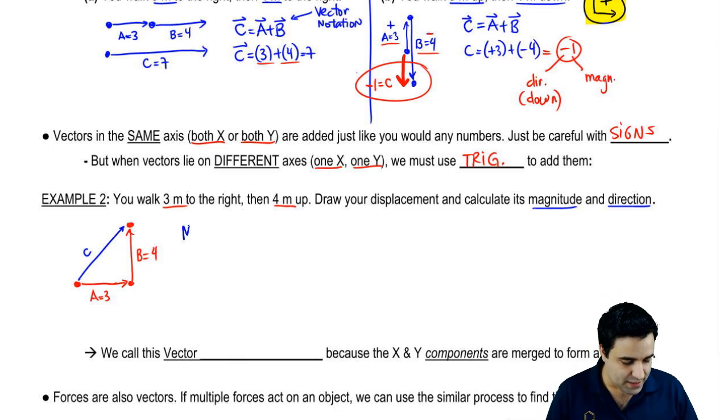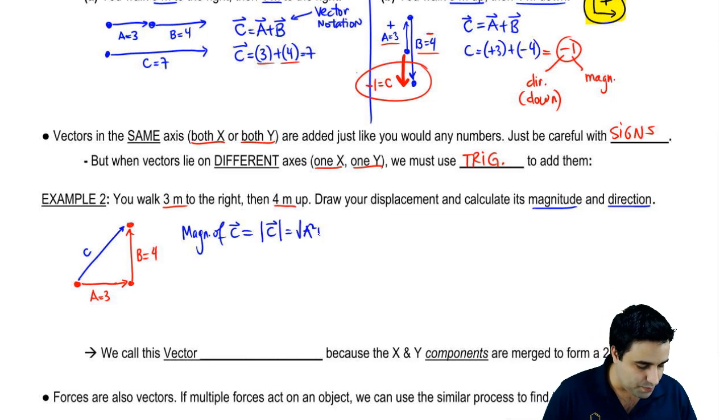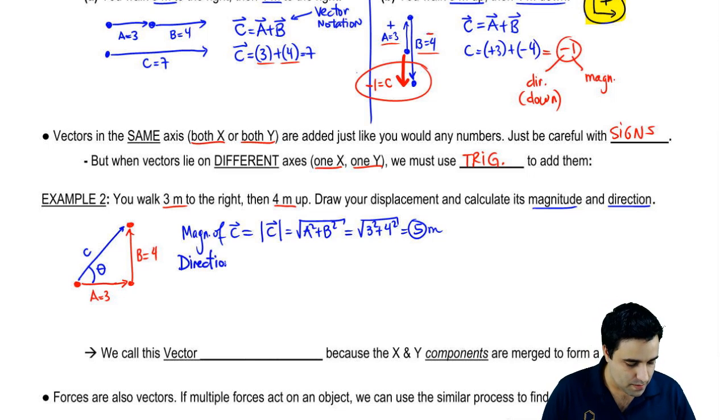To find its magnitude and direction, we're going to use Pythagorean theorem and SOHCAHTOA. I'll show you that just now. So the magnitude of vector C, C is a vector so I can do that, is given by this notation. This is the magnitude of a vector notation. You put the absolute value bars around it, and it's Pythagorean theorem. So in this case, it's just a squared plus b squared. And if I plug in these numbers, 3 squared plus 4 squared, I get 5. 3, 4, 5 triangle. Make this easy.